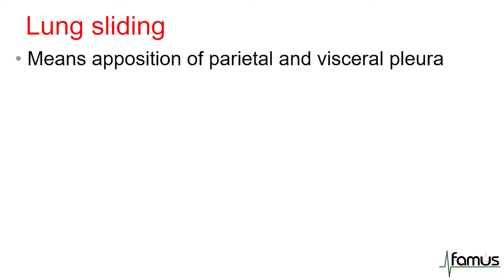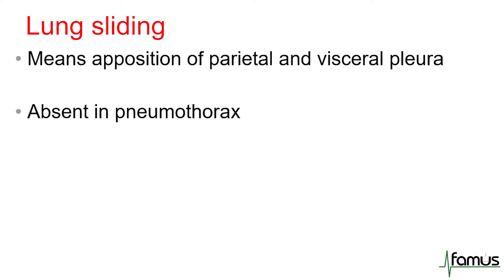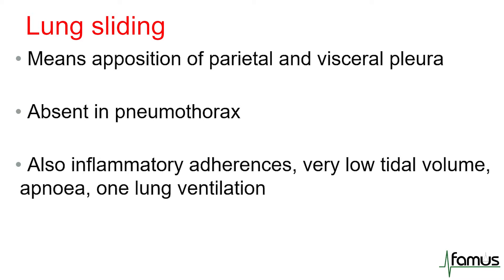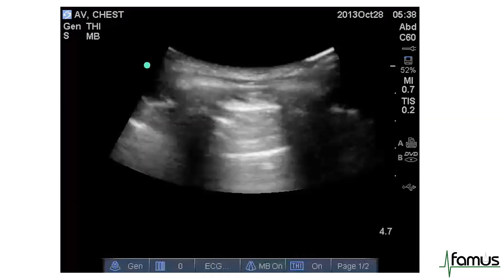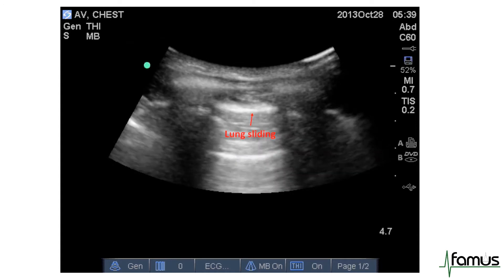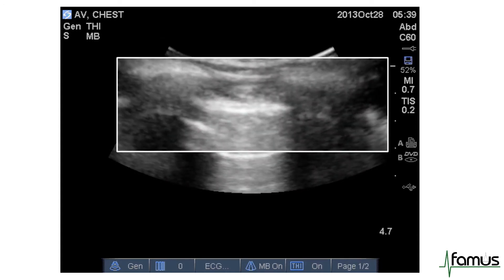Lung sliding effectively means that the parietal and visceral pleura are closely opposed — so they're not separated by air or fluid. You will therefore lose lung sliding in pneumothorax, and also other rarer conditions like inflammatory adherences, very severely inflamed lung, very low tidal volumes, apnea, or for example in one lung ventilation. This video highlights lung sliding, and you'll notice the depth is just four and a half centimetres to really highlight the lung as it's sliding. In a moment we'll zoom in to show in more detail the marching events, or the pleura opposing across each other.